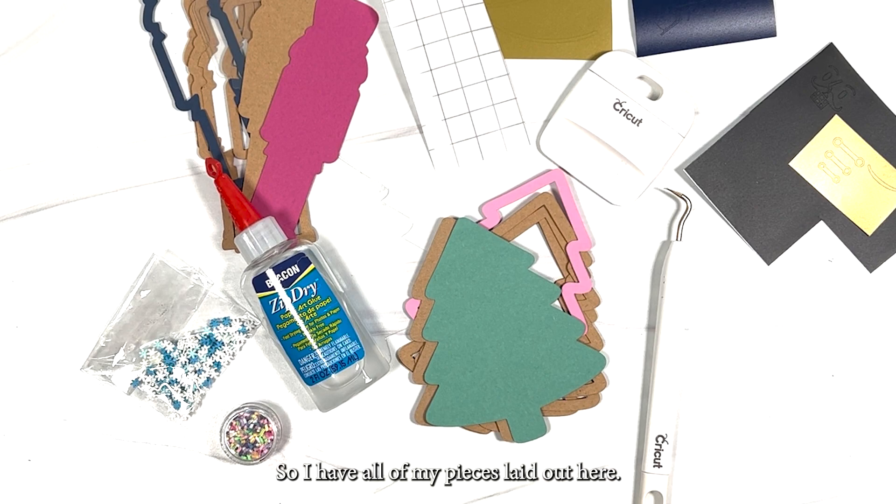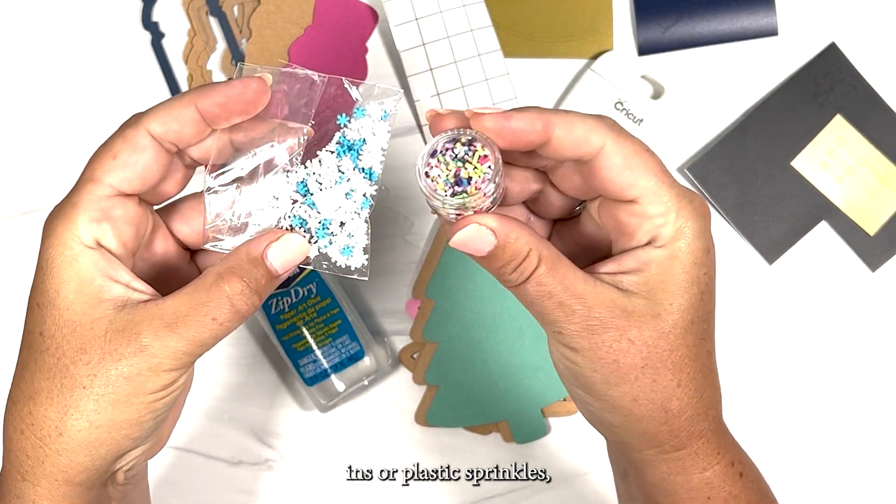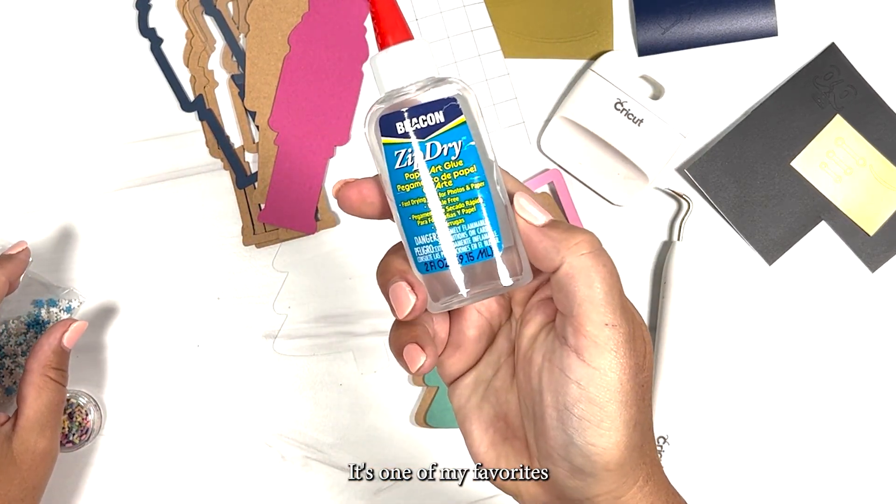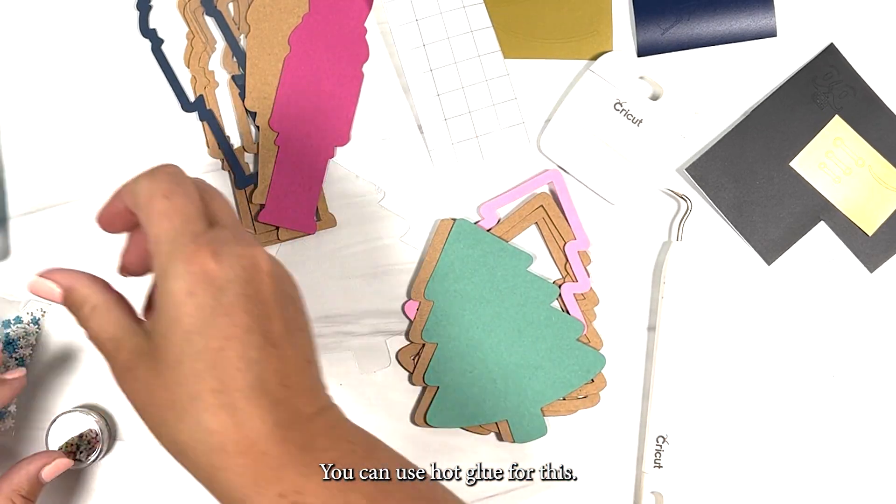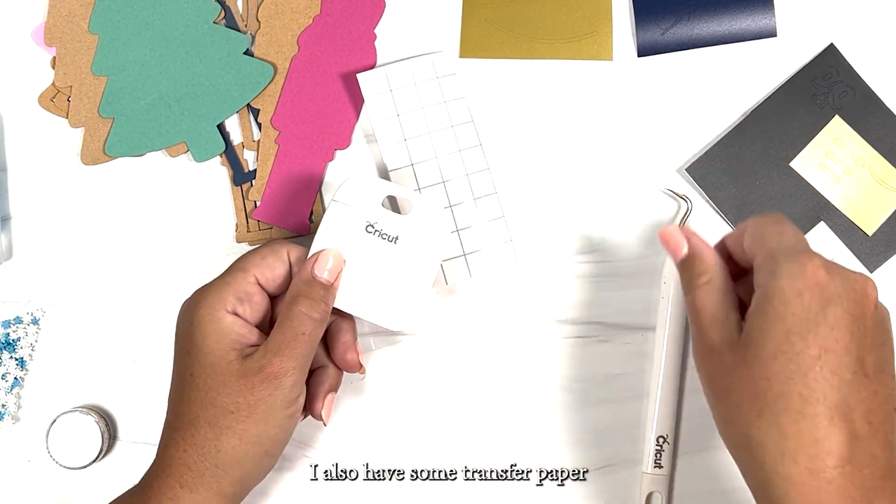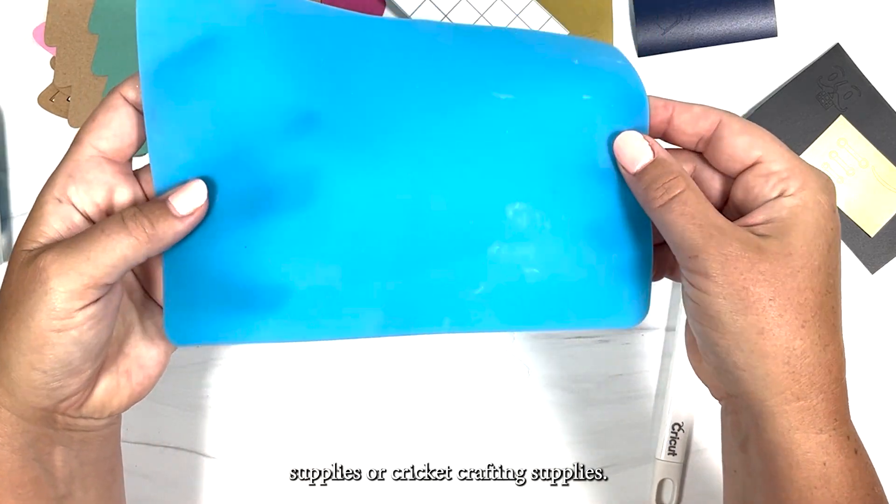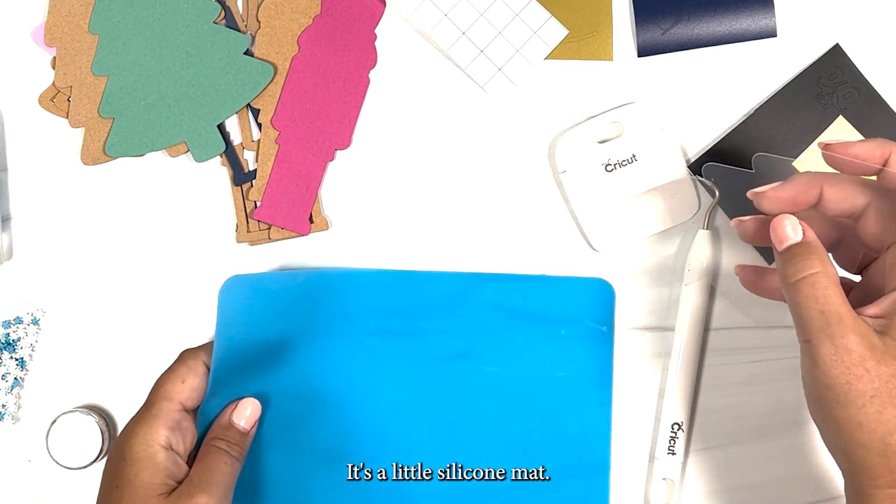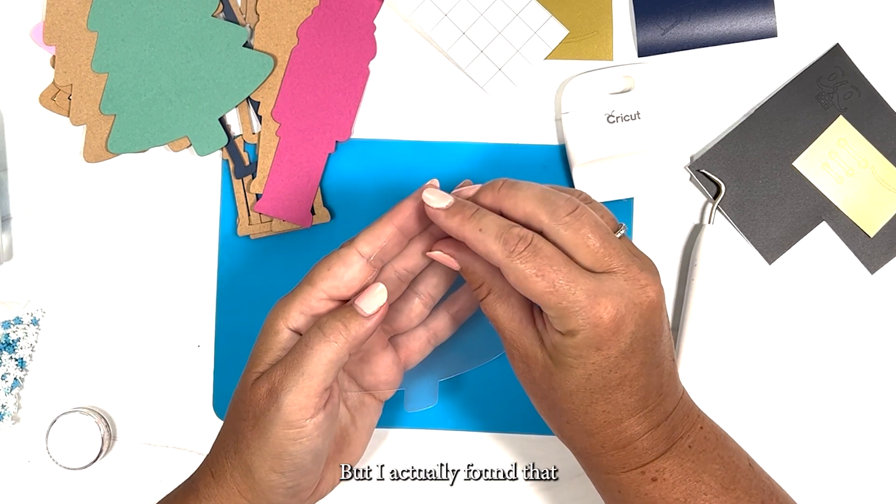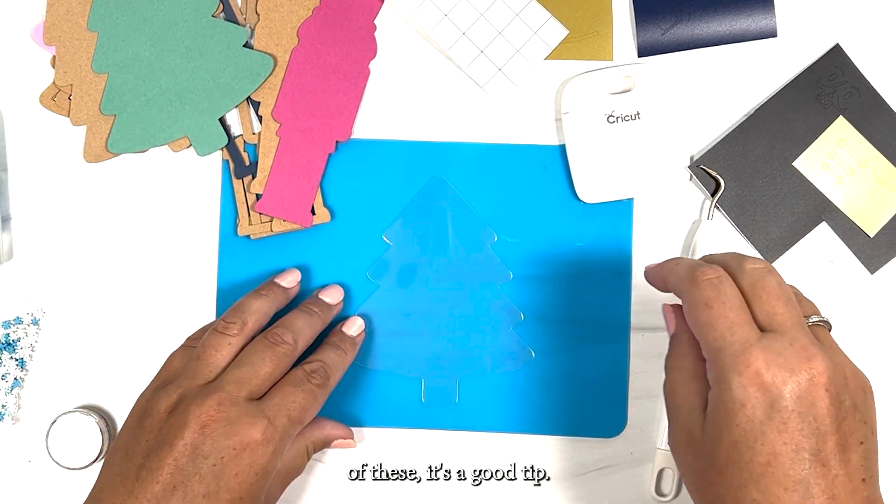So I have all of my pieces laid out here. I'm using plastic snowflakes and plastic sprinkles. I'll have the supplies linked but if you want to search for plastic add-ins or plastic sprinkles, a lot of these things will come up on Amazon or Etsy. I'm also using Beacon Zip Dry glue. It's one of my favorites because it dries really fast. You can use hot glue for this but good luck not burning your fingers. There's all of my cardstock and craft board pieces. I also have some transfer paper or transfer tape, my scraper, my weeding tool, just basic paper crafting supplies or Cricut crafting supplies. And this is one of my favorite things. It's a little silicone mat. I'm using it here just because it makes it a little easier to see what I'm doing on the white background. But I actually found that while I was doing this project it made it really easy for the glue and everything. So if you don't have one of these it's a good tip.